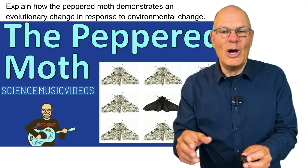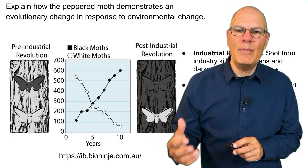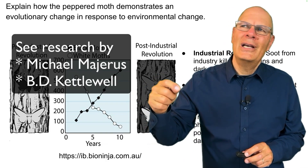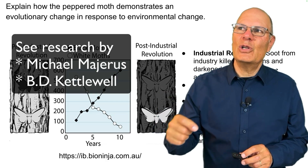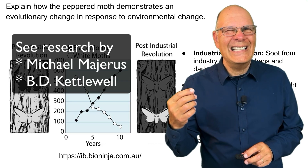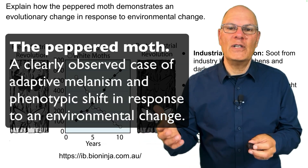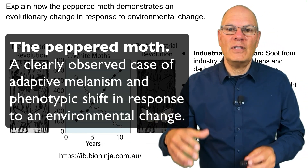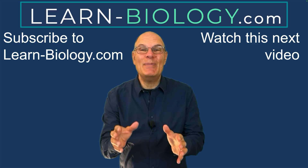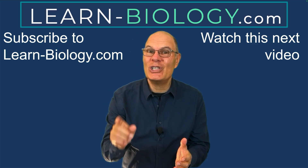The peppered moth story was embroiled in some controversy, but the work of Michael Majerus in the early 2000s, which replicated work done by B.D. Kettlewell, established this as a clearly observed case of adaptive melanism — a phenotypic shift in response to environmental change. Please subscribe to learn-biology.com and watch the next video.